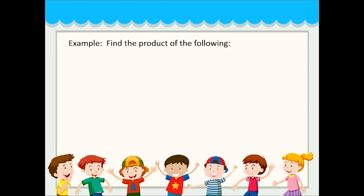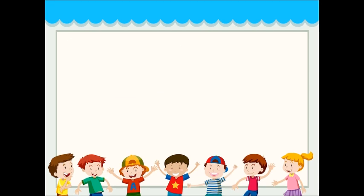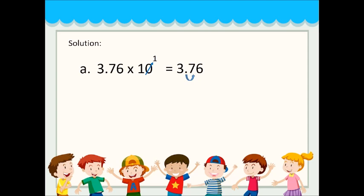Find the product of the following: 3.76 times 10, 89.769 times 100, 4.657 times 1,000, and 6.97 times 10,000. For letter A, 3.76 times 10: since 10 has one zero, we move the decimal point once to the right. The answer is 37.6. For 89.769 times 100: 100 has two zeros, so we move the point twice to the right. The answer is 8,976.9.